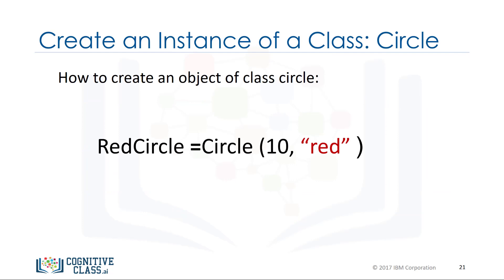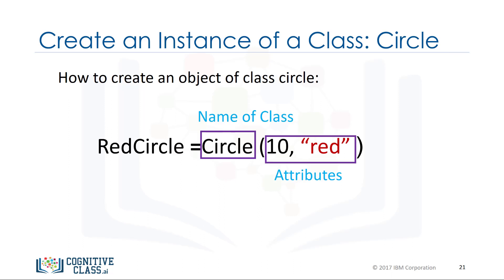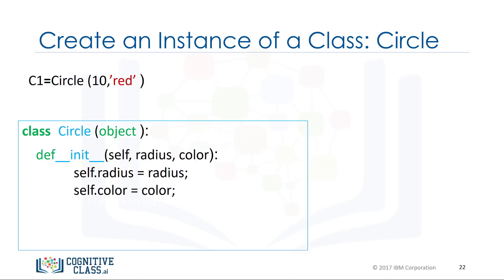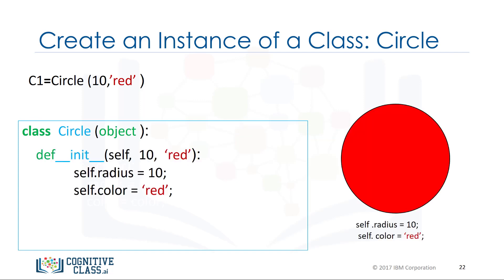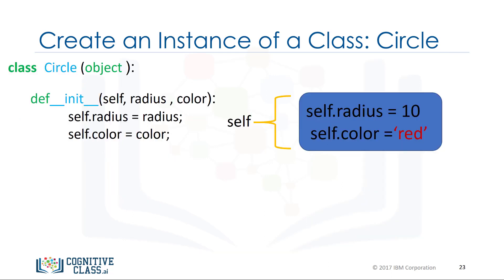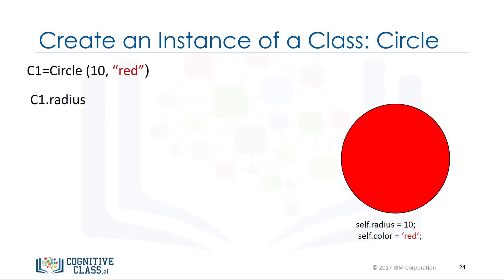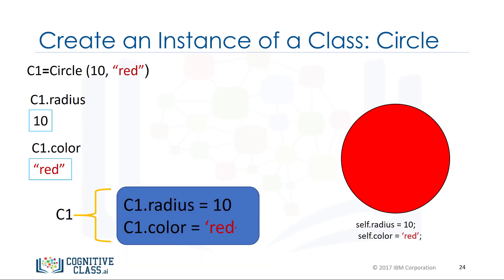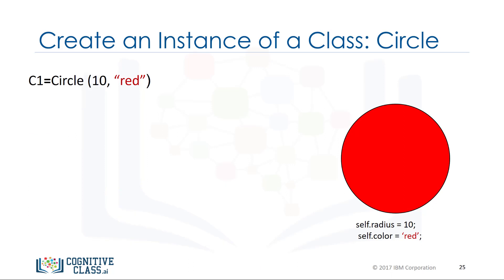After we have created the class, in order to create an object of class circle we introduce a variable — this will be the name of the object. We create the object by using the object constructor, which consists of the name of the class as well as the parameters, which are the data attributes. When we create a circle object, we call the code like a function. The arguments passed to the circle constructor are used to initialize the data attributes of the newly created circle instance. It is helpful to think of self as a box that contains all the data attributes of the object. Typing the object's name followed by a dot and the data attribute name gives us the data attribute value — for example, radius is 10. We can do the same for color. In Python, we can also set or change a data attribute directly by typing the object's name, followed by a dot and the attribute name, and setting it equal to the new value.